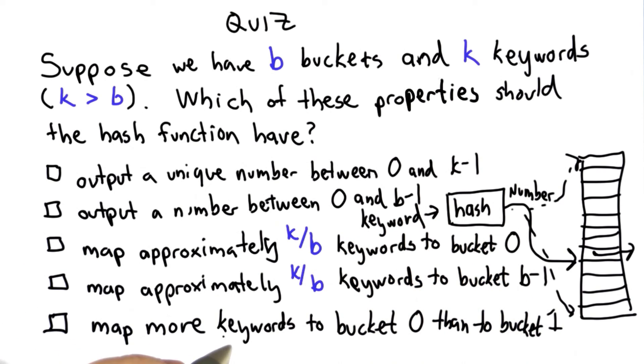And the final choice is it should map more of the keywords to bucket 0 than it maps to bucket 1. So check all of the properties that we would like the hash function to have.